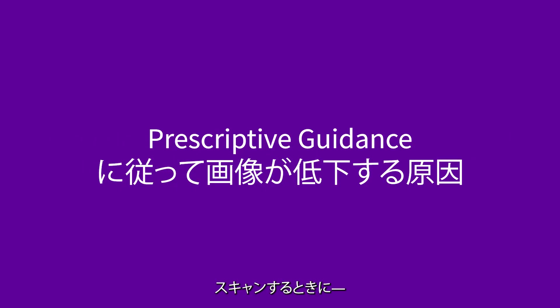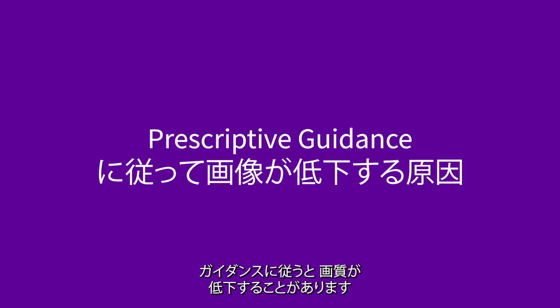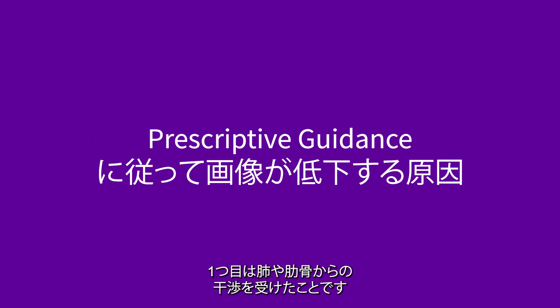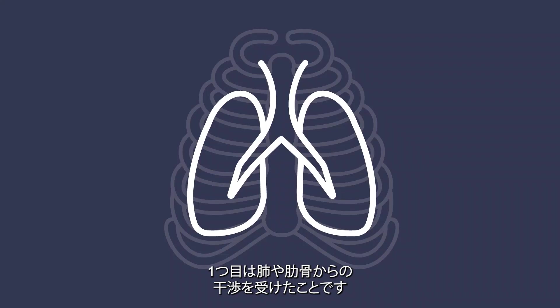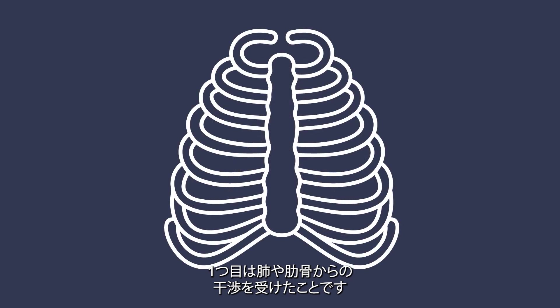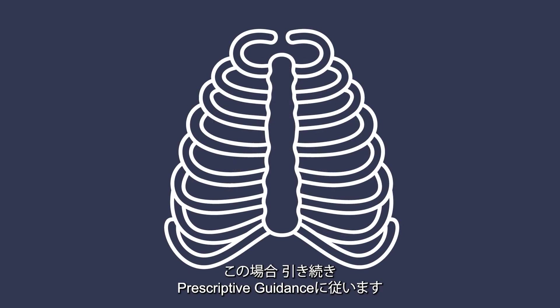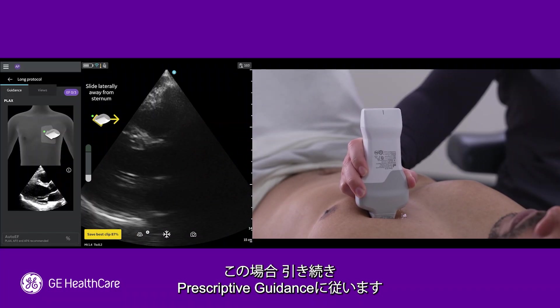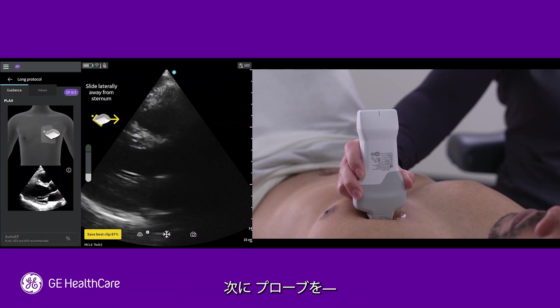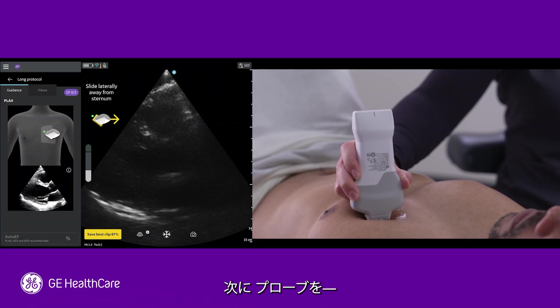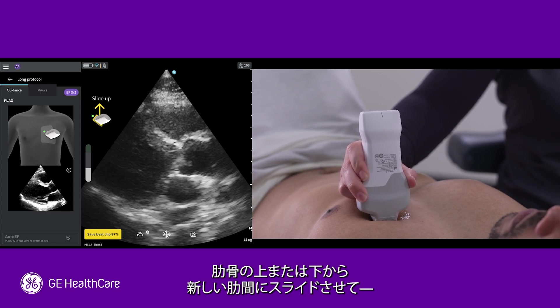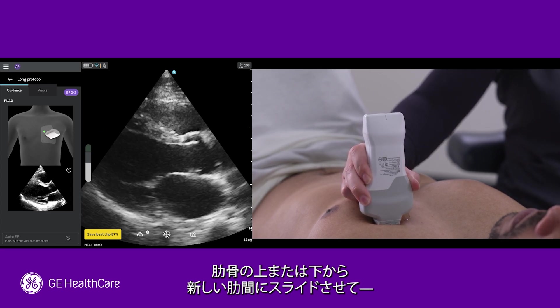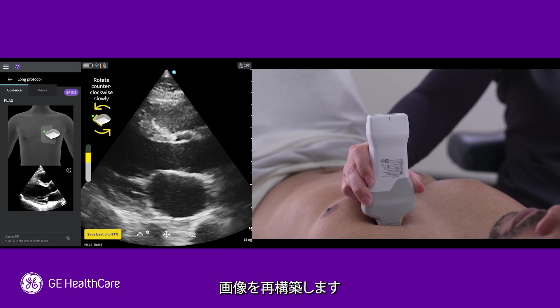Sometimes when scanning, you might think the image is getting worse as you follow the guidance. This can generally be one of two things. One, you have run into interference from the lungs or the ribs. In this case, continue to follow the prescriptive guidance. Then, try to re-establish your image by sliding the probe above or below the rib to a new intercostal space.